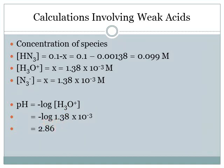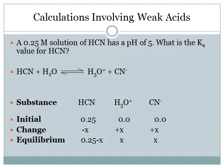To find the pH: pH = −log[H₃O⁺] = −log(1.38 × 10⁻³) = 2.86.